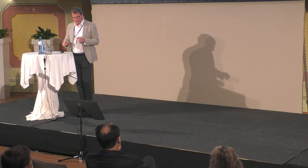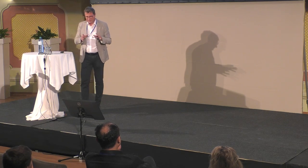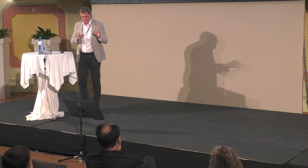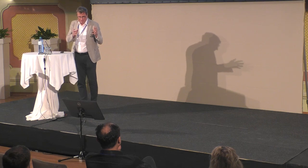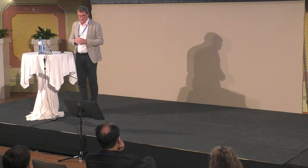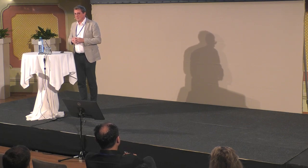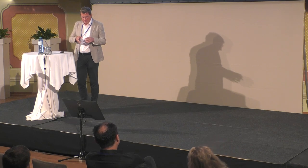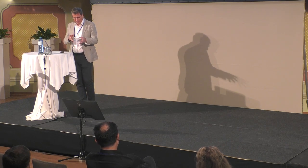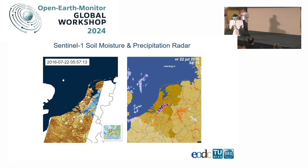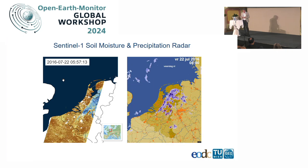To give an impression: on the left side you see a Sentinel-1 image of the Netherlands where brown colors mean the soil is dry and blue means the soil is wet. On the right you see a weather radar animation. The Sentinel-1 image was taken around 6 o'clock in the morning and the radar animation starts around 2 o'clock in the morning, so you nicely see how the rainfall moves and leaves an imprint of water on the soil surface.